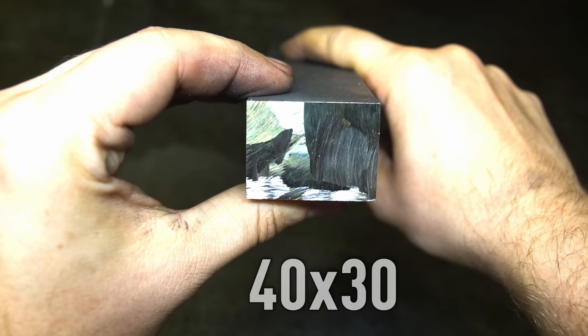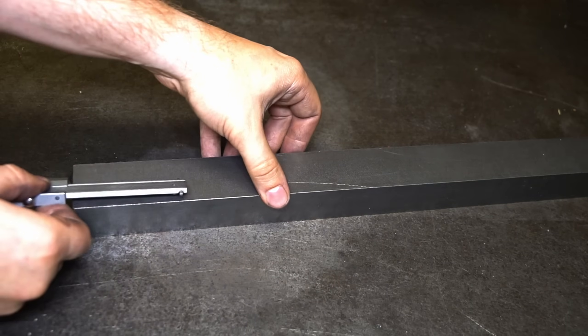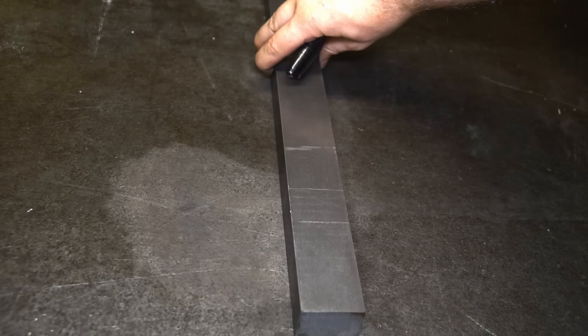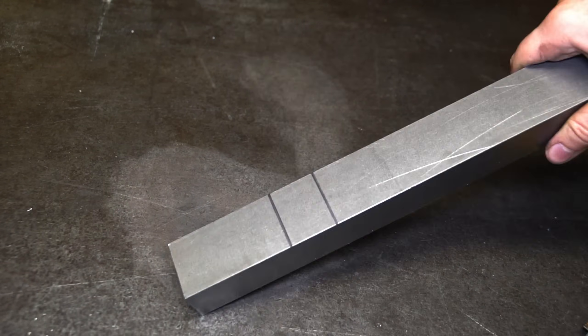40 by 30 piece of steel. Cold rolled. First of all, some markings for cutting the stock. And now let's breathe in some steel dust.